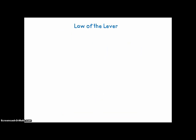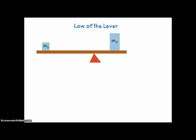Law of the lever. Here we have a seesaw, and there's a heavier object on the right than on the left. In order to balance the seesaw at the middle — which is kind of like the centroid — we have to place the heavier object nearer to the balancing point. We know from physics that if we multiply each mass times the distance to the balancing point or centroid, we get the same product.